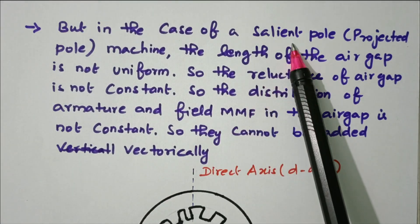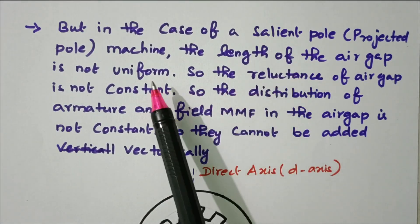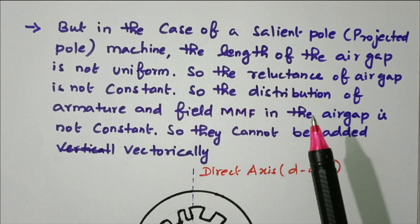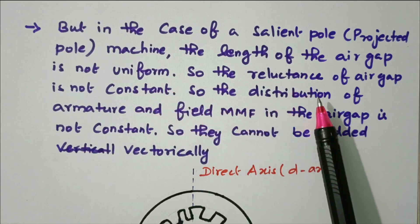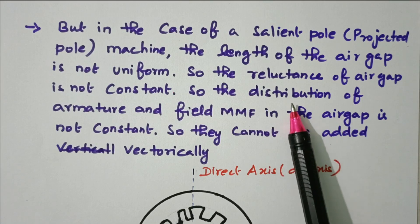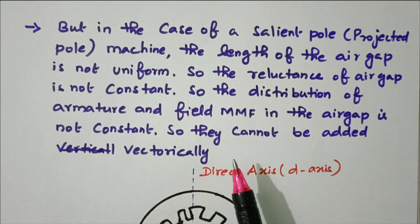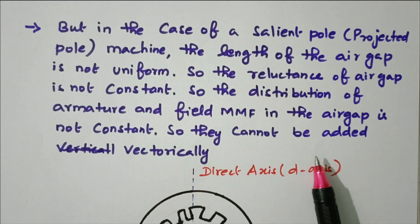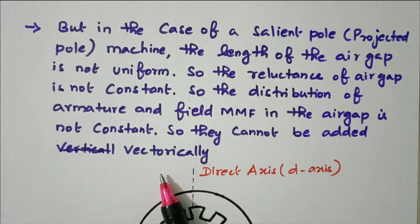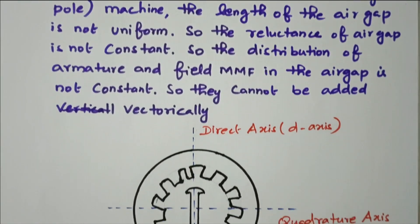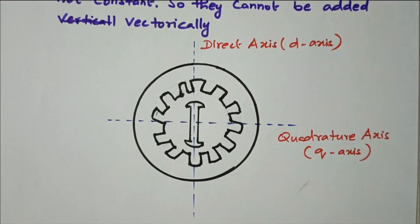In case of salient pole, the air gap is not uniform and the reluctance of the air gap is not uniform. So the distribution of MMF in armature and field is also not uniform, and therefore they cannot be added vectorially. For that reason, we use this two reaction theory.